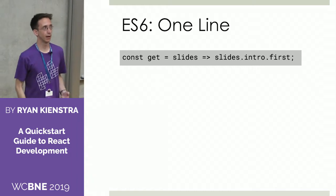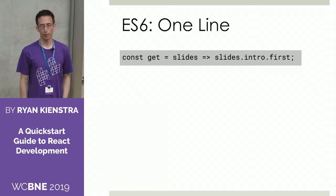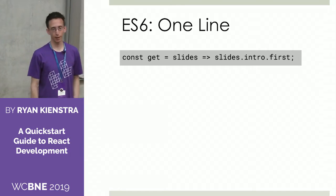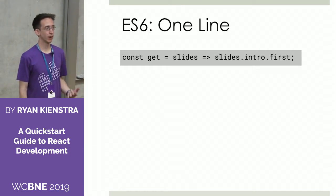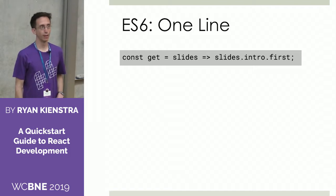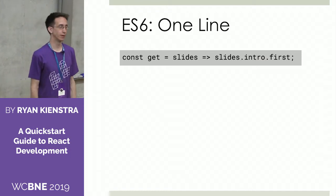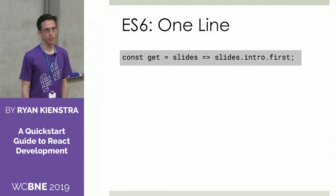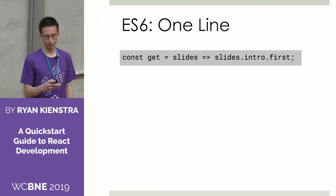Similarly, you can have a single-line return — it's not too important to know this, but it can be confusing if you see it in a block. If you see slides as the parameter and a single expression after the arrow, there's actually no return statement needed. So it's just returning slides.intro.first without having to write return. It's a little easier if you have something to put on one line.